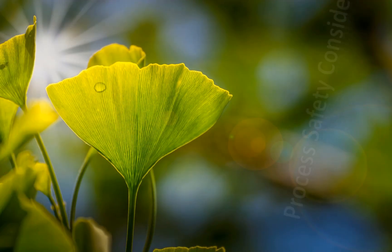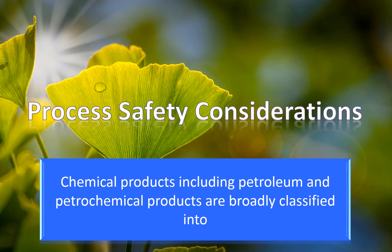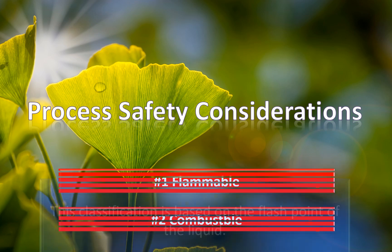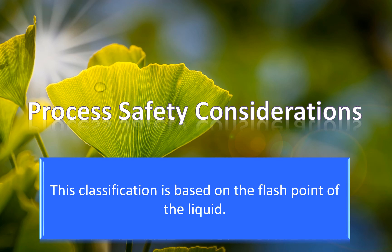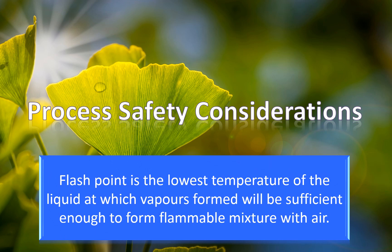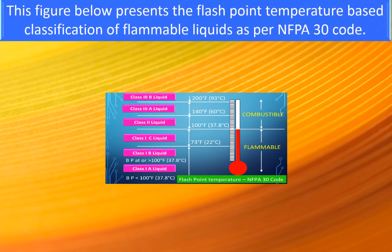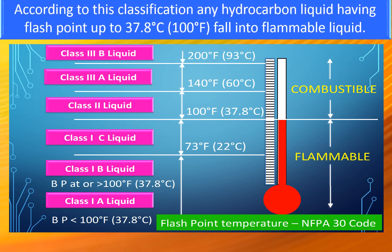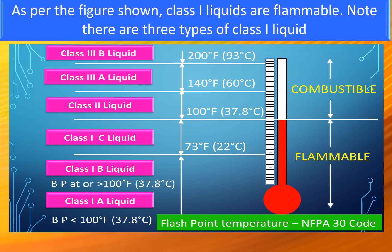Process safety considerations: chemical products including petroleum and petrochemical products are broadly classified into flammable and combustible. This classification is based on the flash point of the liquid. Flash point is the lowest temperature of the liquid at which the vapours formed will be sufficient to form a flammable mixture with air. The figure below presents the flash point temperature-based classification of flammable liquids as per NFPA 30 code. According to this classification, any hydrocarbon liquids having a flash point up to 31.8 degrees centigrade fall into the flammable liquid category.